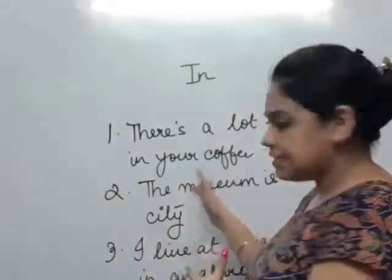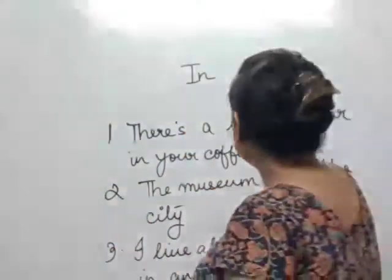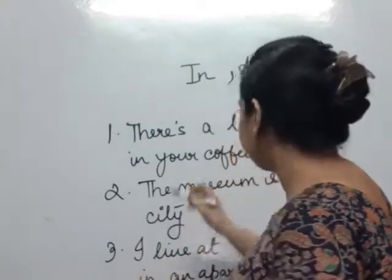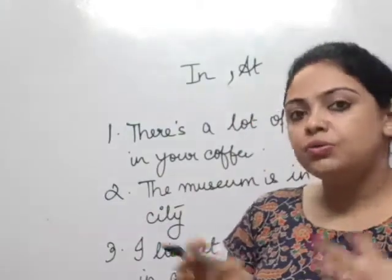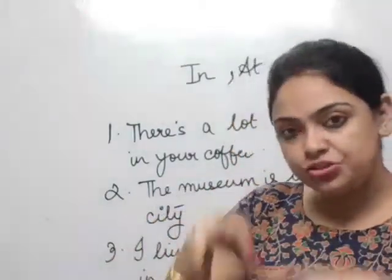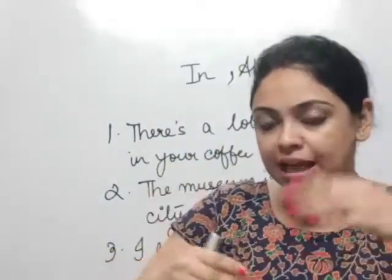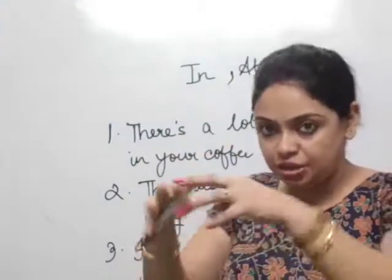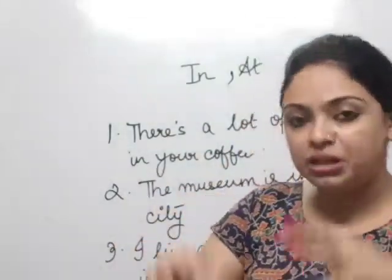Let's look at sentences using in and at. There is a lot of sugar in your coffee. "In" shows that within the edges of the cup you have inside and outside both, so the edges are very clear. The enclosed part is very clear — so you have a lot of sugar in your drink or in your beverage.